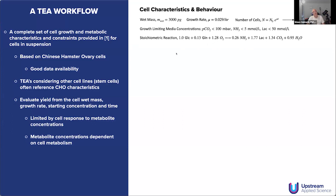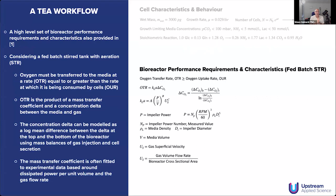To work out what the concentrations are, we have to describe the metabolism of the cell. For CHO cell data there's good information to build a stoichiometric reaction model — this is the catabolic part. It tells us the rate at which cells will be absorbing oxygen, glucose, and glutamine, and producing ammonia, lactate, and carbon dioxide. From a bioreactor perspective, we then need to look at oxygen transfer rate — the rate at which the bioreactor enables oxygen to be transferred from the gas in bubbles or headspace into the media so it can be consumed by cells. We need to ensure that the rate of transfer into the media is greater than the rate that cells are consuming it.